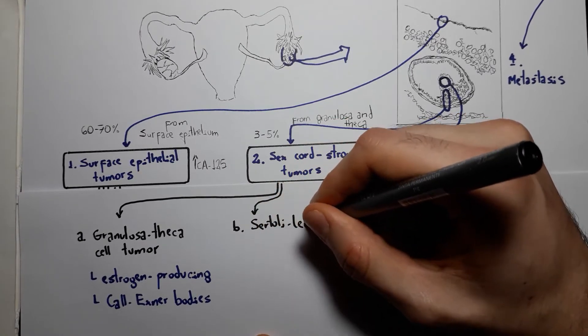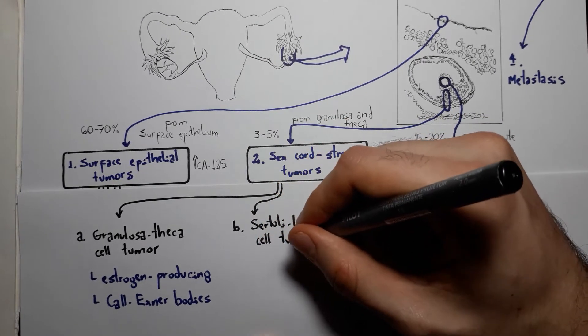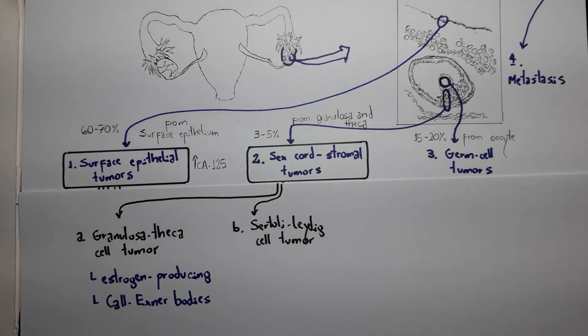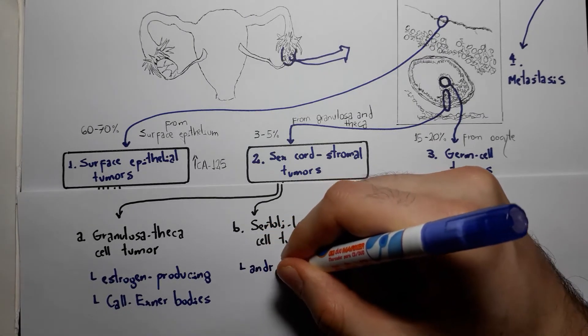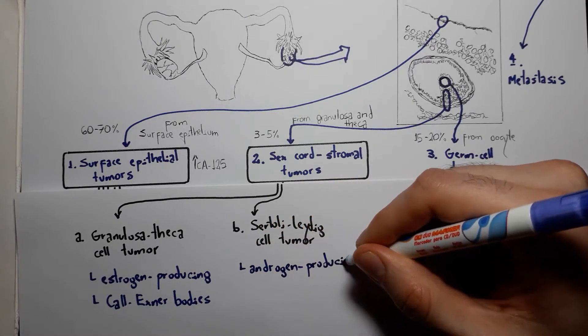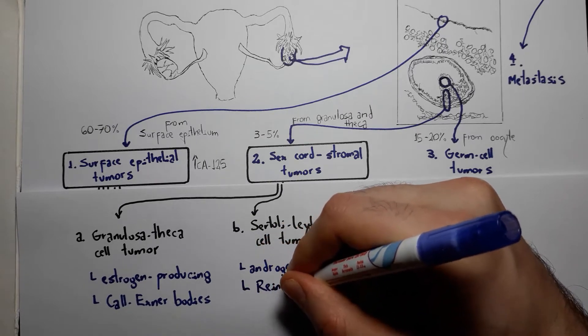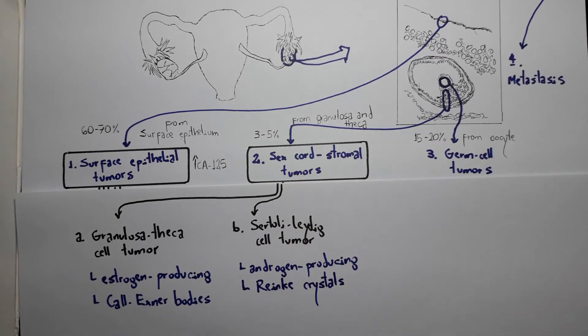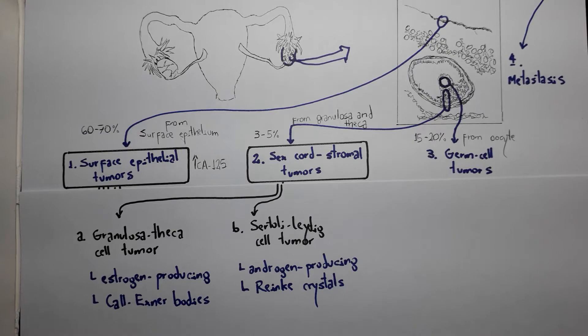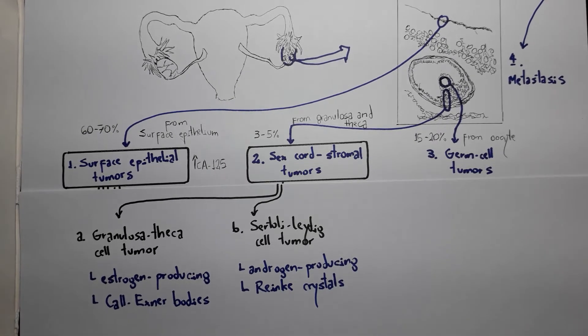Since they have the same embryonal origin, these tumor cells could also differentiate into male counterparts and form a Sertoli-Leydig cell tumor. It will have the Reinke crystals characteristic of Leydig cells, and it will be an androgen-producing tumor that can cause virilization.